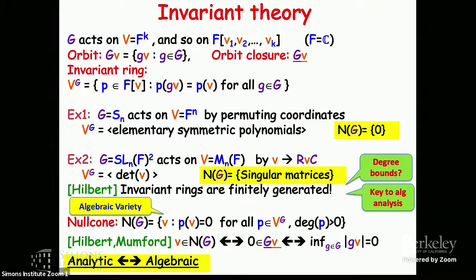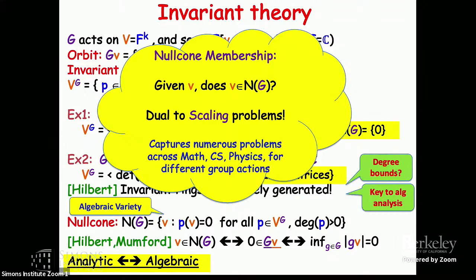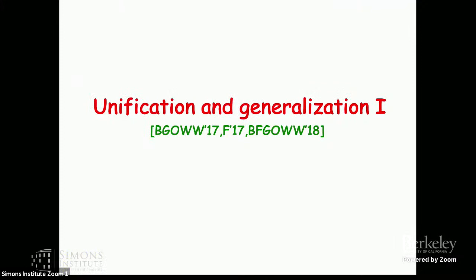Null cone membership — given a vector, is it in the null cone of the group action? — turns out to be a natural problem you're familiar with. Perfect matching is one; the non-commutative operator scaling problem is one; and many others. Moreover, this question is dual to the scaling problems we discussed — it captures lots of problems. In many problems you don't hear about symmetry even when you see them, just as in physics you learn energy and momentum are invariants without necessarily mentioning invariant theory.